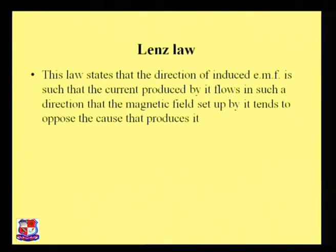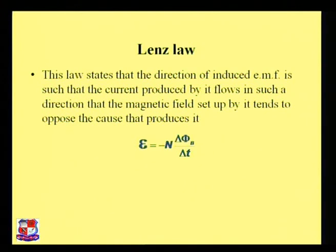Now, what is Lenz's law? Lenz's law states that the direction of induced EMF is such that the current produced by it flows in a direction so that the magnetic field set up by it tends to oppose the cause that produces it. The equation is E = −N dφ/dt, where the minus sign indicates Lenz's law.